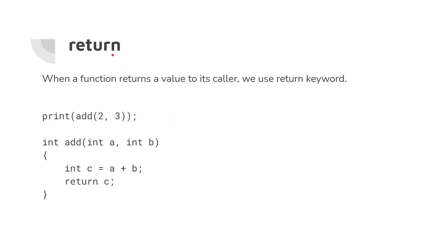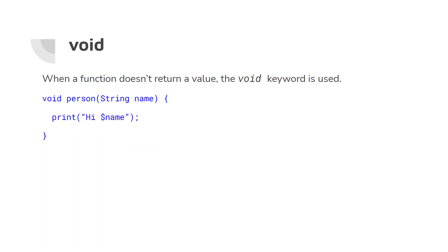The keyword 'return' is obvious — when a function returns a value we use return. For example, function add takes two integers, adds them together, and returns the result to the caller. The 'void' keyword is used when a function doesn't return a value. We use void at the beginning of the function definition to show that it just performs some tasks and doesn't return a value.